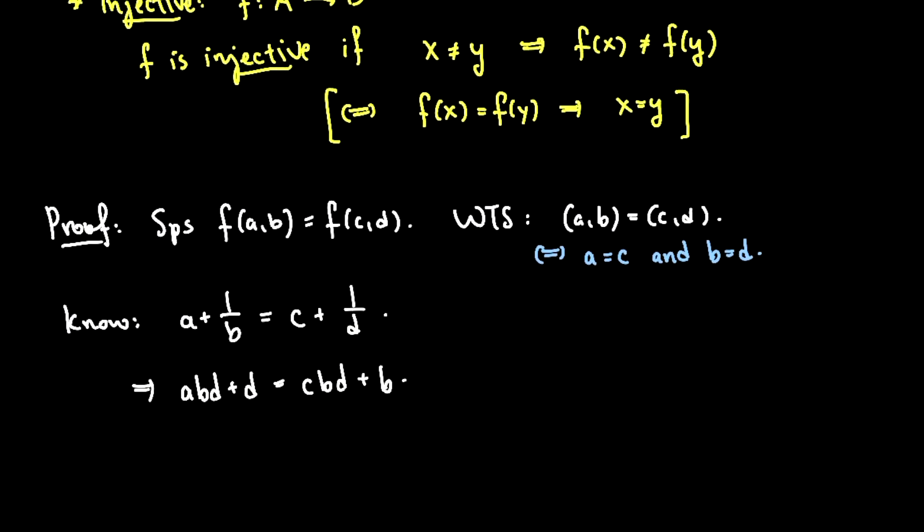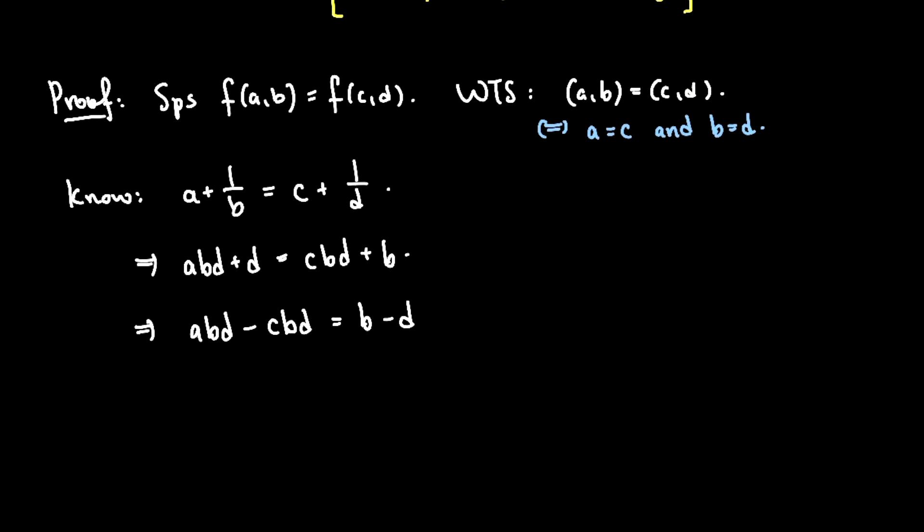And my next instinct is to look at this and say, this term a bd and this term c bd both have bd as a factor. So why don't I collect those? I'll say a bd minus c bd, by bringing things over and rearranging the equation, equals b minus d. And I factor out this bd here. So I get a minus c times bd equals b minus d.